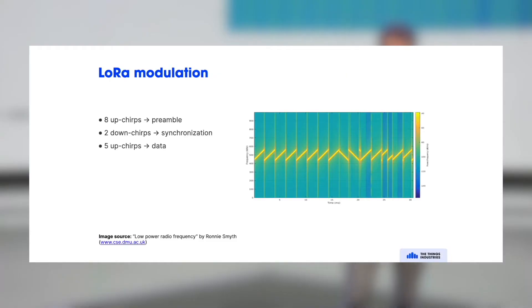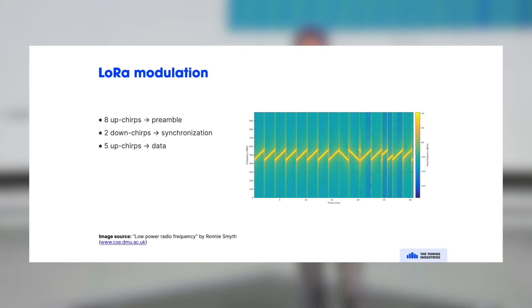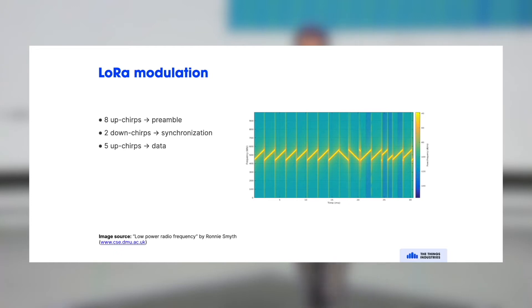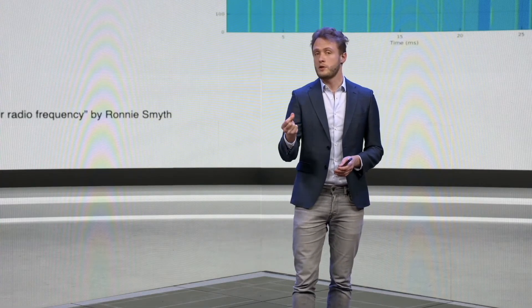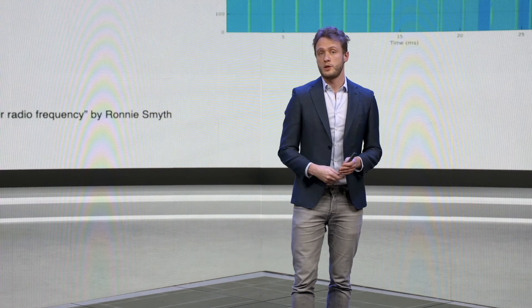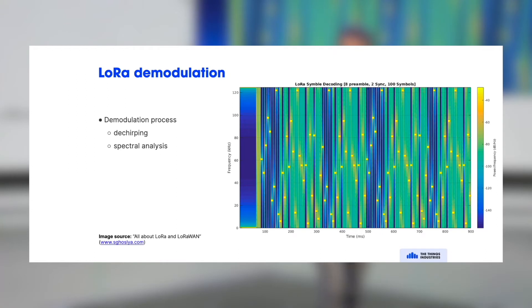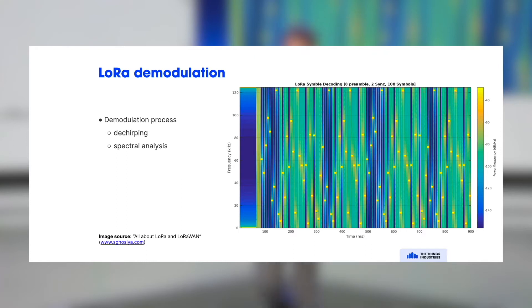Looking at the modulation itself: when an end device sends a message, it sends eight chirps — you can see them on the left — and then there are two down chirps going the other way. Then there are more up chirps with the data. This is an indication for the receiver that data is coming, like an announcement saying 'hey, there's data coming.' On the demodulation side, the inverse happens: there's dechirping and then spectral analysis to figure out what symbols were transmitted.